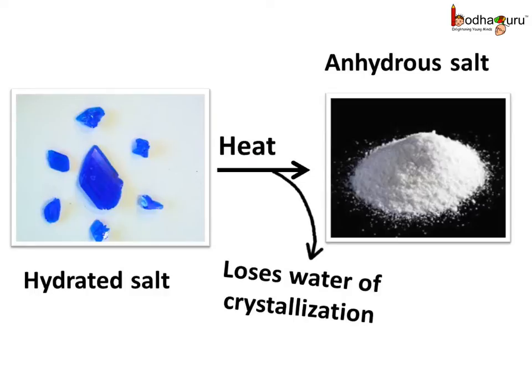If we heat copper sulphate crystal, it loses its shape and turns into white powder. This powdery salt is called anhydrous salt — it has no water molecules attached to the salt molecule.